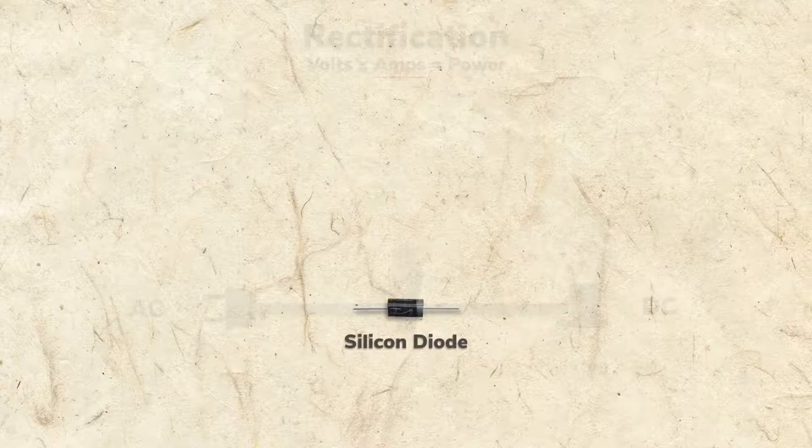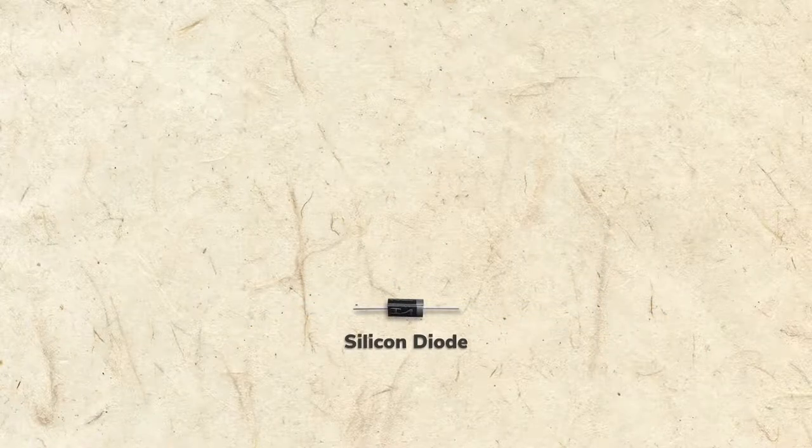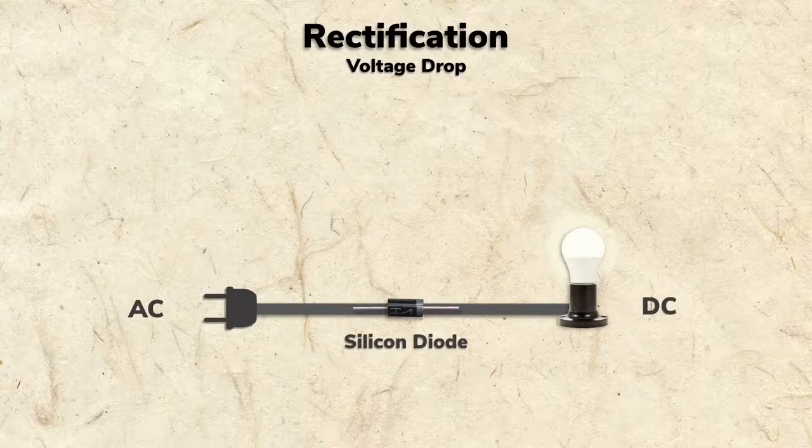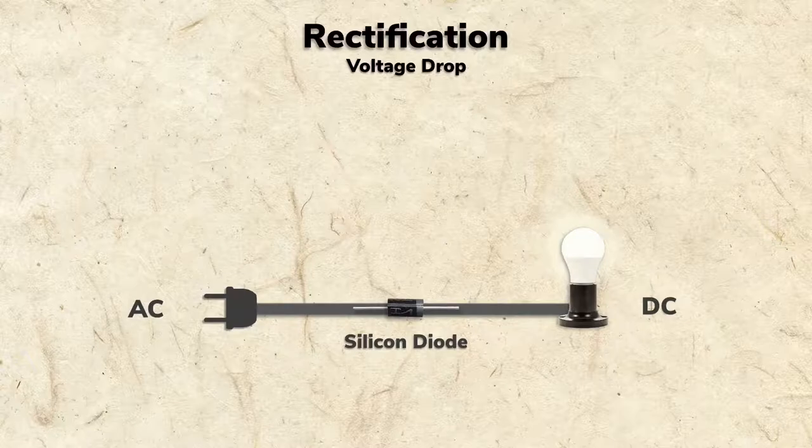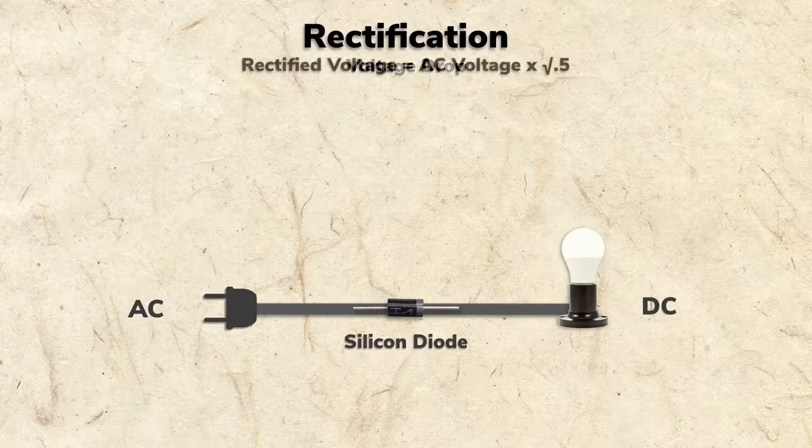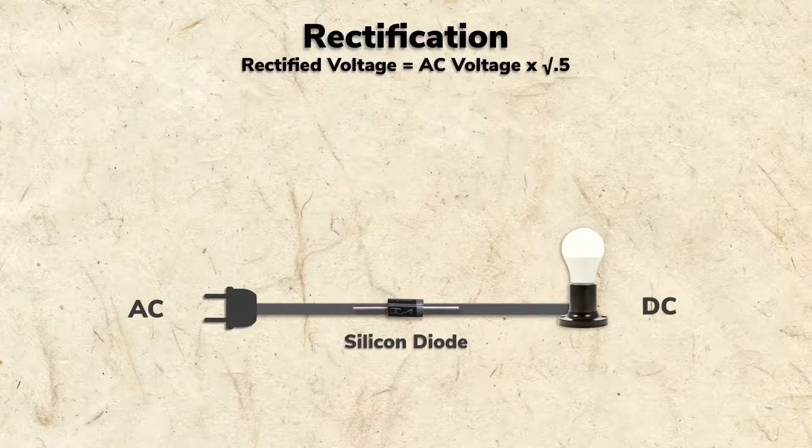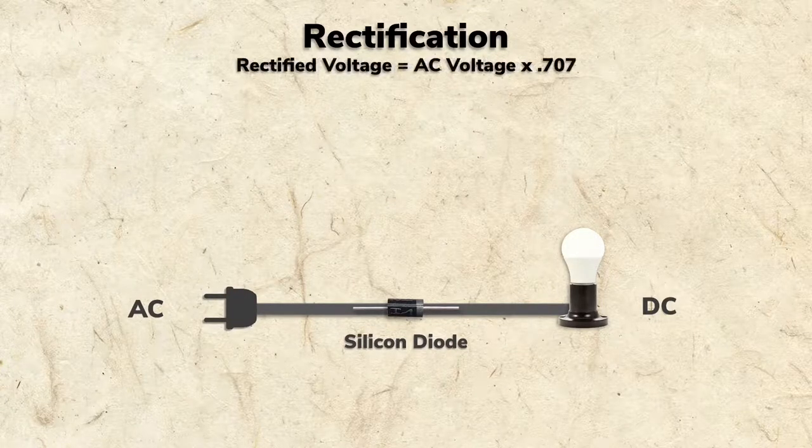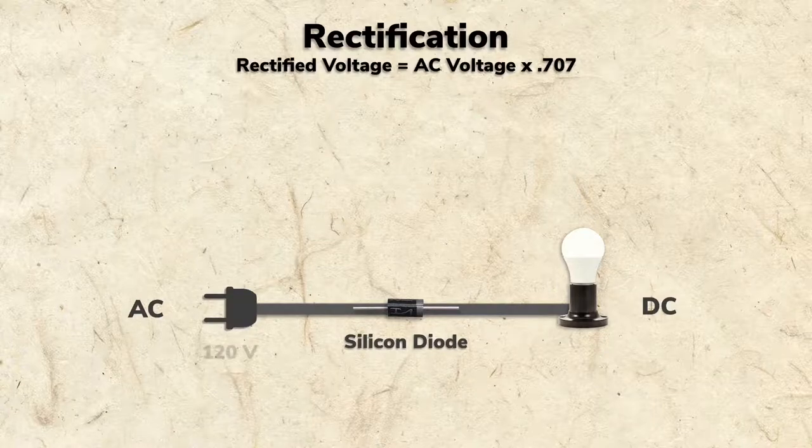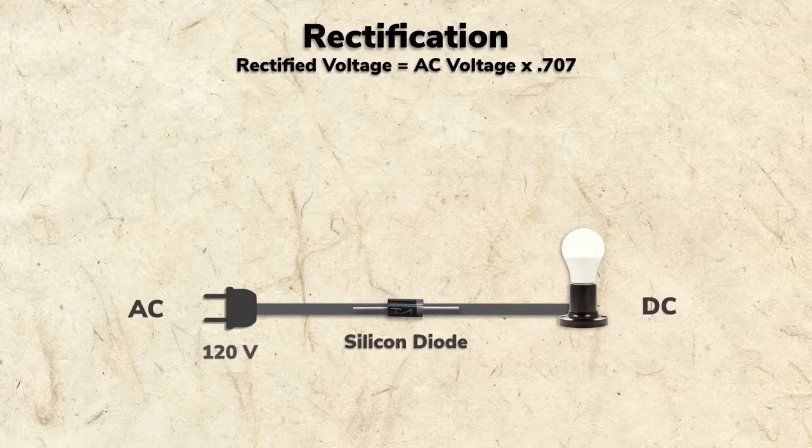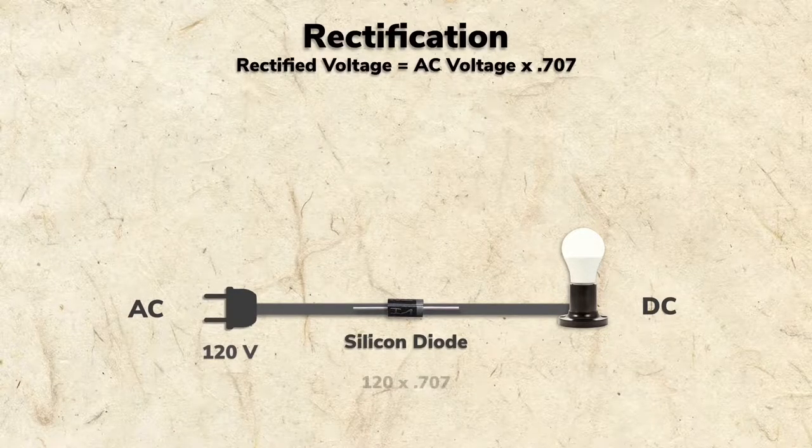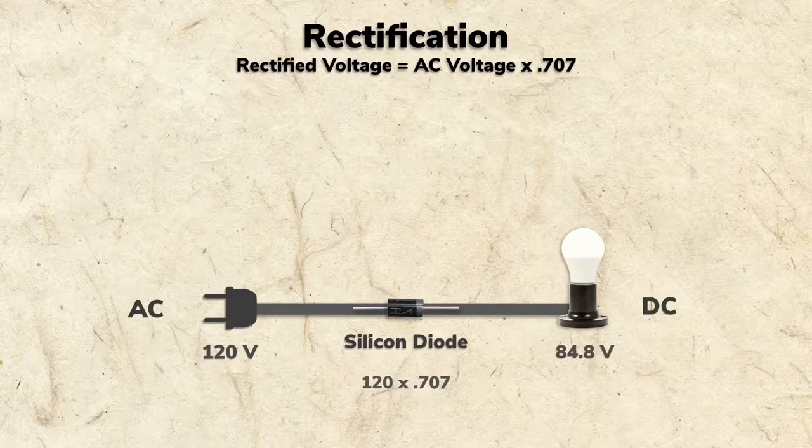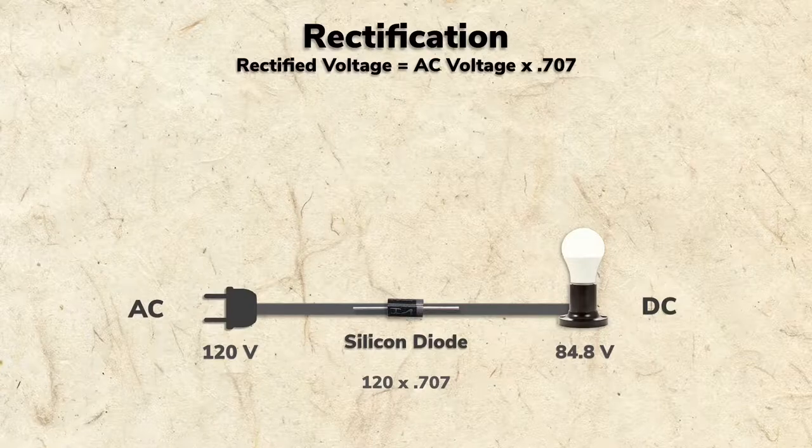In the next section, we'll use a modern silicon diode to fix an issue with our radio. Let's calculate how much voltage and amps it will actually drop. To do this, we need another formula. The formula for rectification states that the rectified voltage equals the voltage times the square root of 0.5, which is 0.707. The voltage coming into the diode will be around 120 volts. If we multiply that times 0.707, we find that the output voltage will be 84.8.